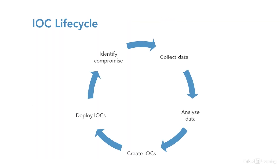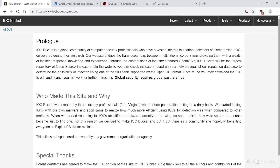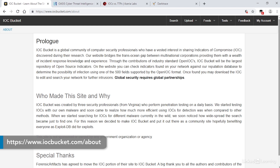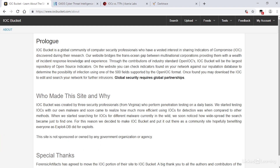The life cycle of an IOC can be seen in this graphic. When a compromise due to malware occurs, an investigation takes place and data is collected to determine what's happened and how it's happened. This provides much valuable information about the way the malware works. The data can be analysed and IOCs created. These can then be deployed to intrusion prevention systems to ensure the same compromise doesn't happen again. Sharing IOCs is of real value to organisations that haven't yet been attacked because they can use them to avoid attack.